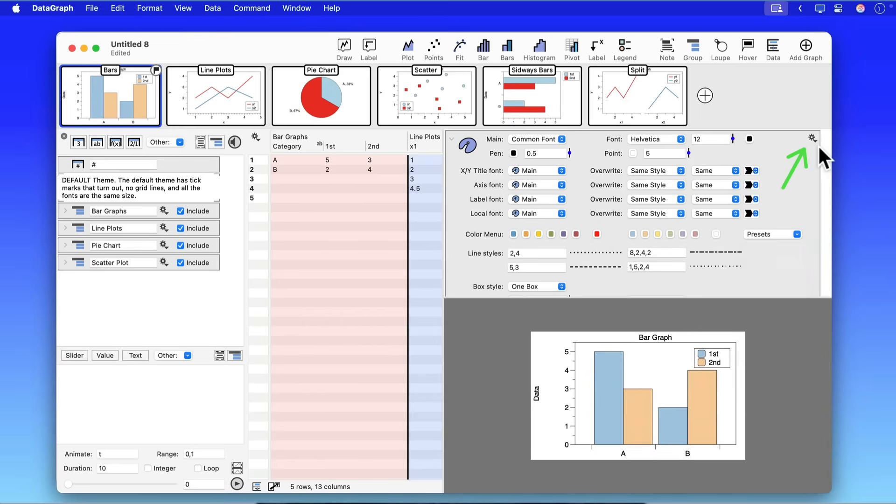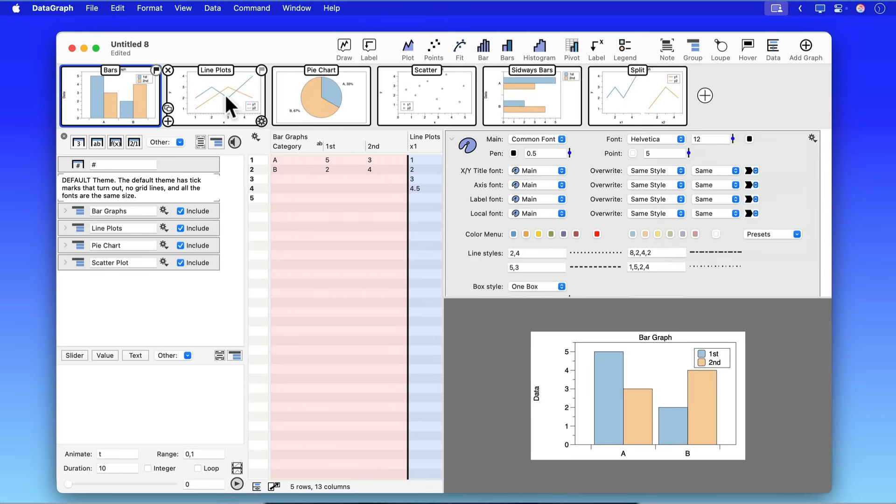For example, within the same file you can use the gear menu to set all the graphs in that file to the same style settings including updating the colors.